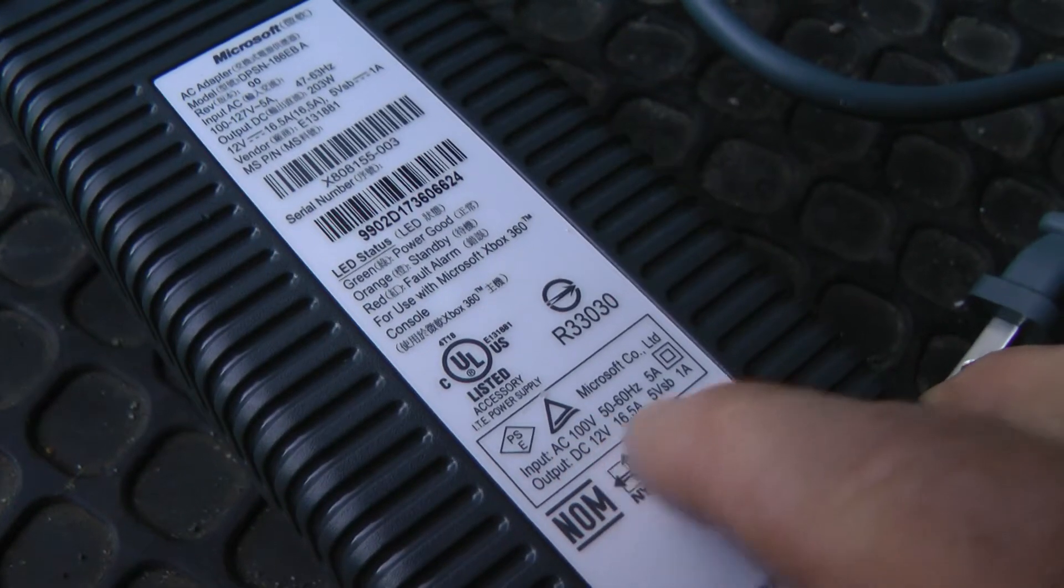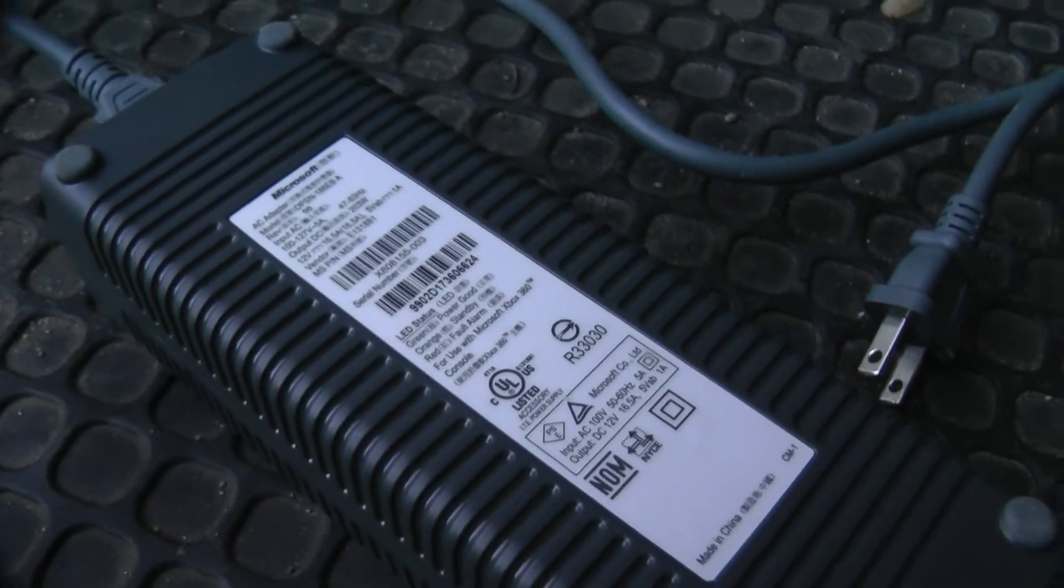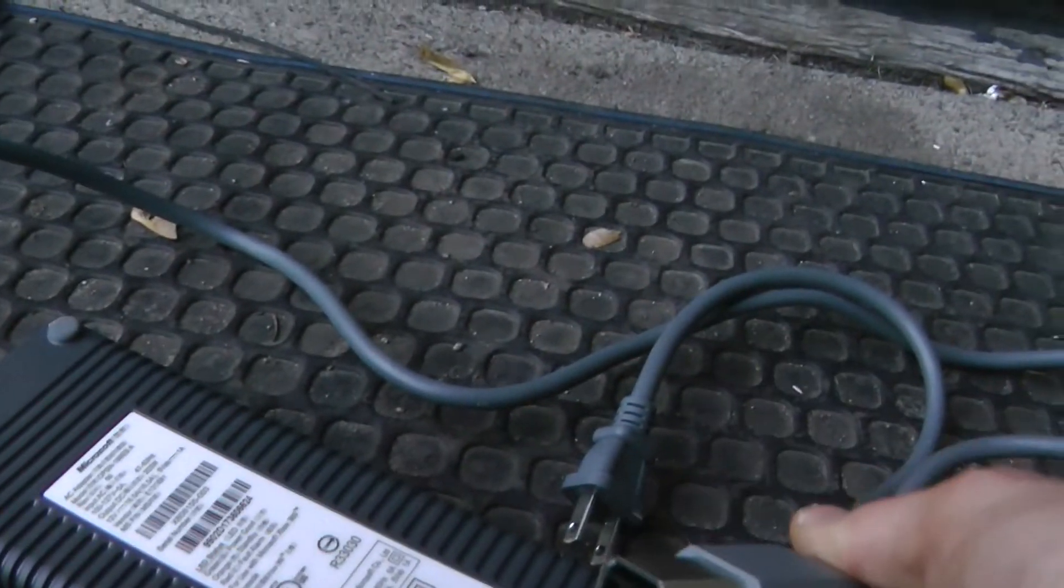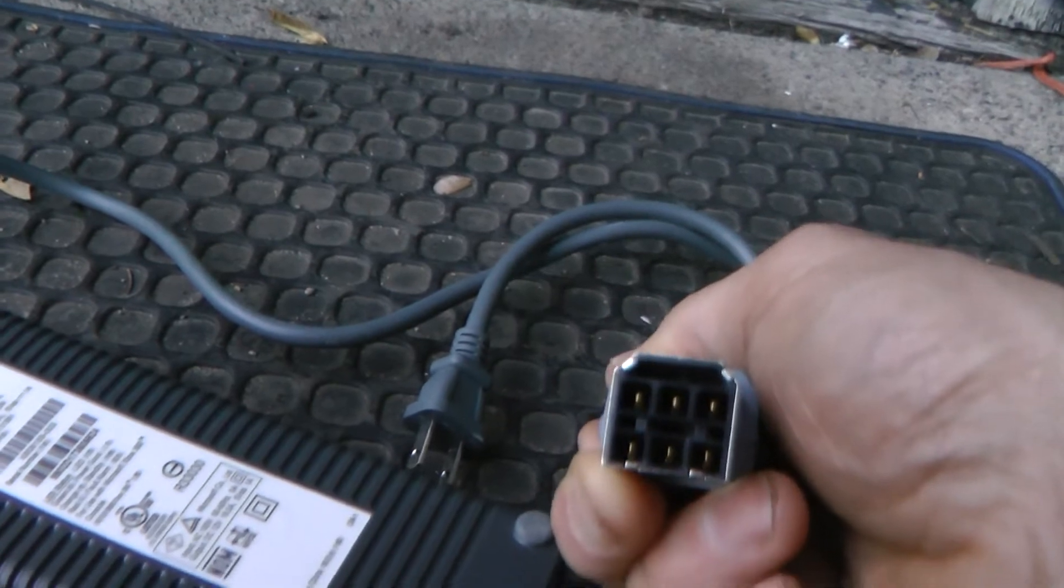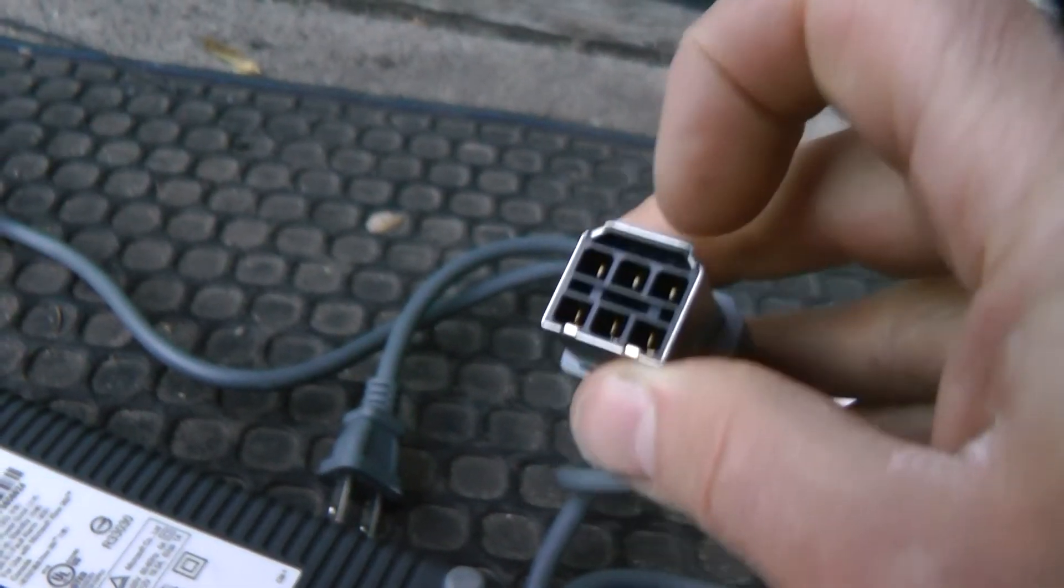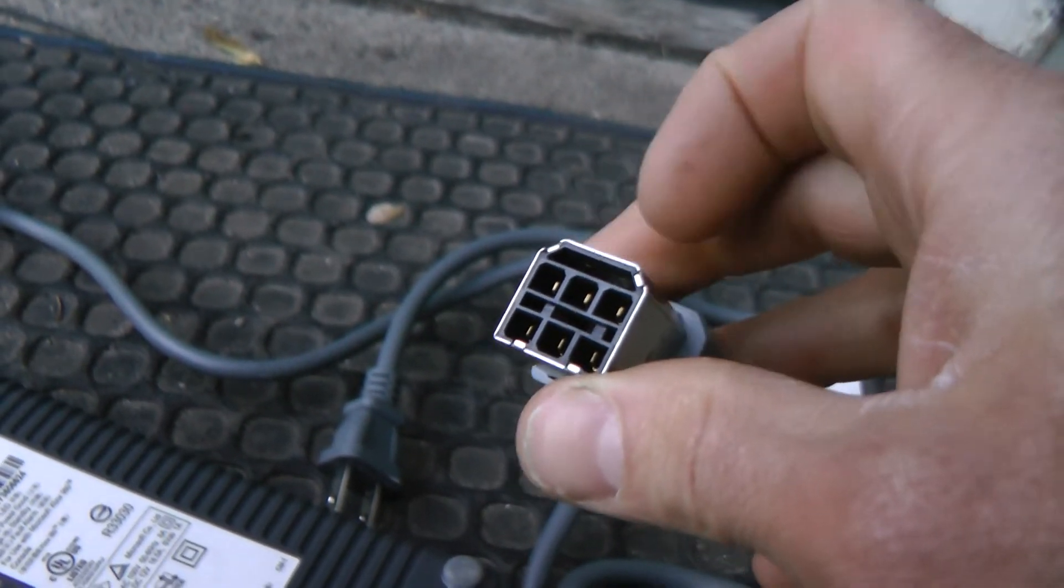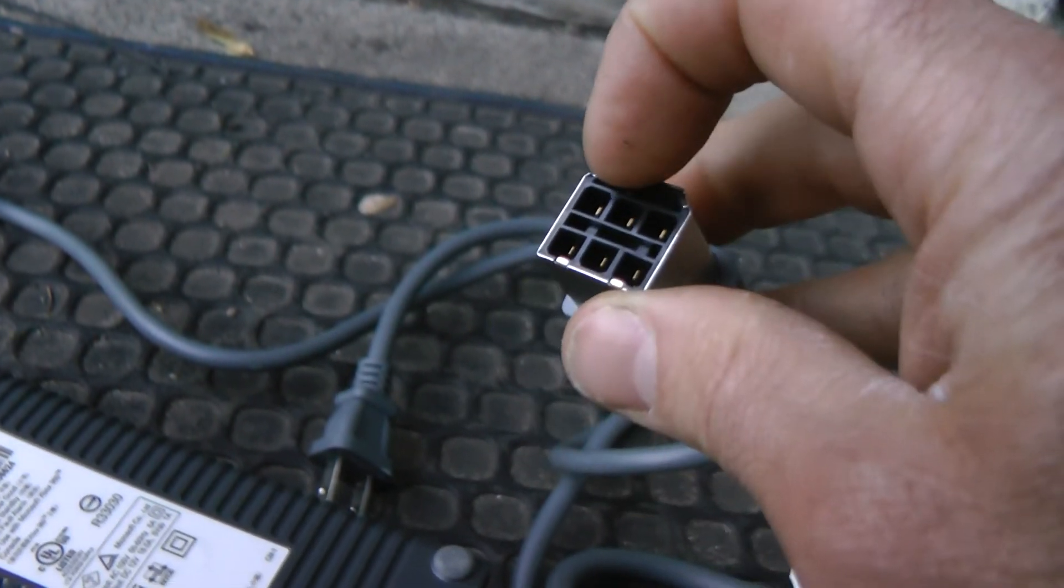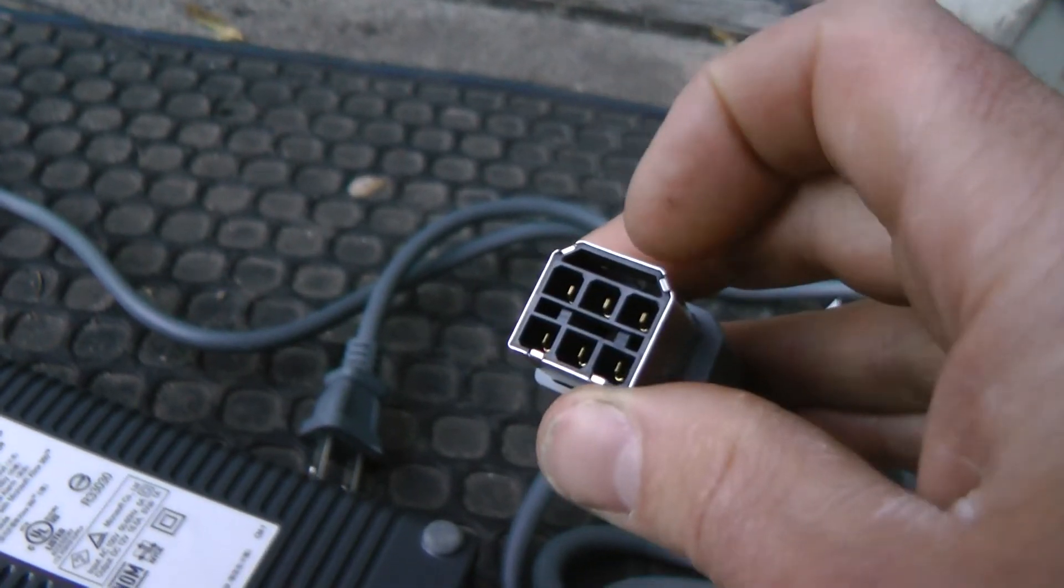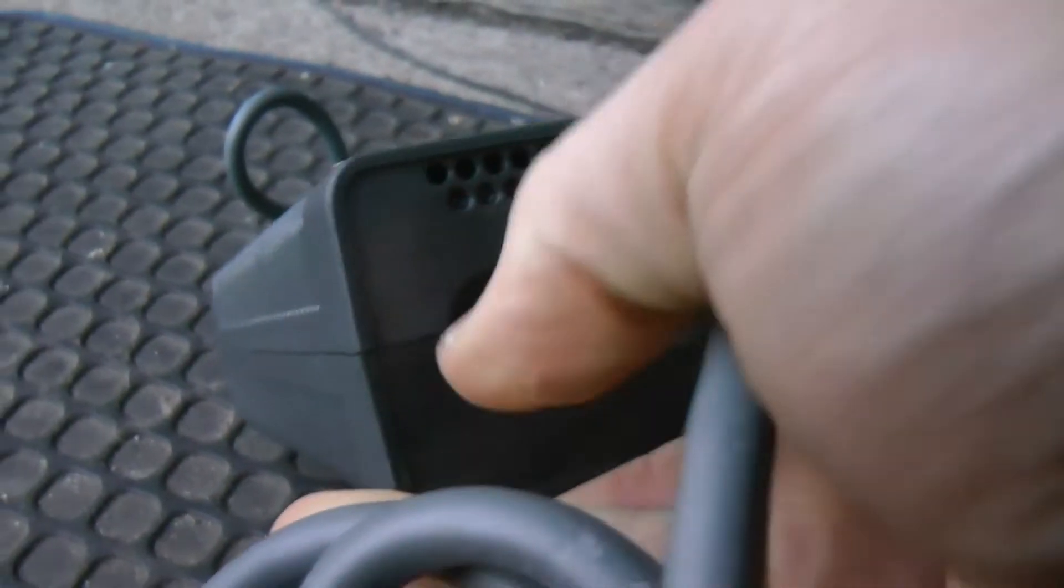There is a website that has the pins all numbered. To turn this thing on you gotta short two pins underneath right here - one's the power turn on and one's five volts. If you just jam a piece of metal in there it'll send power to tell the power supply to wake up. That will turn this light from amber to green.